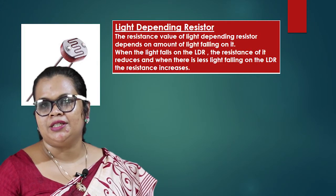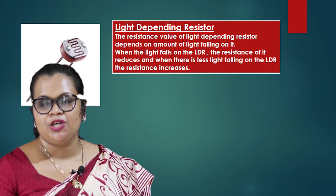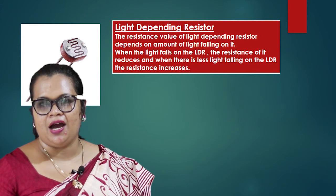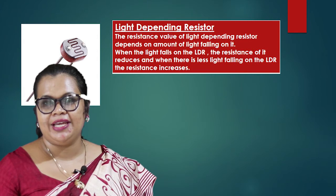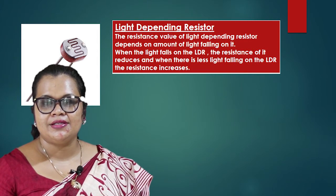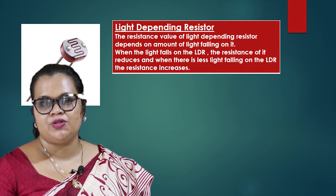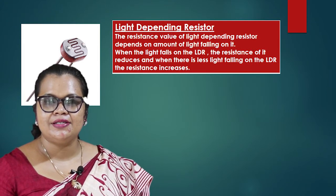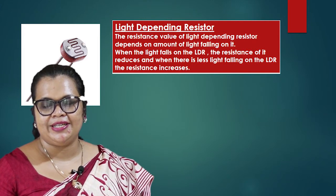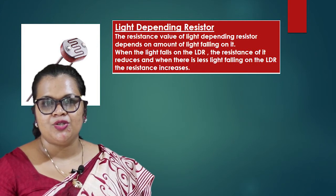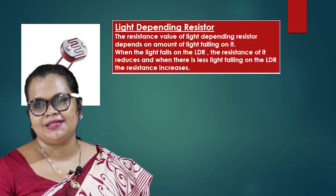Now we are going to learn about a kind of light sensitive resistor. We call it LDR, or light dependent resistor. The speciality of the LDR is that its resistance decreases when light falls on it, and the resistance of LDR increases when it is covered or darkened. These LDRs are used in sensor circuits.